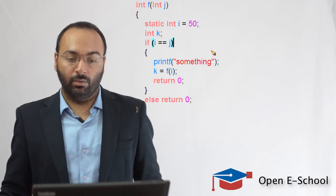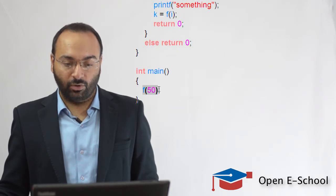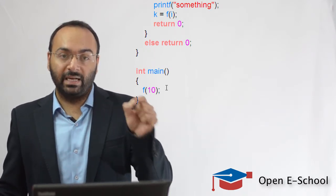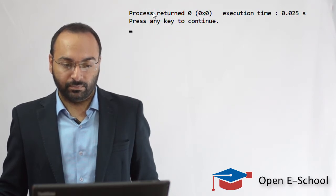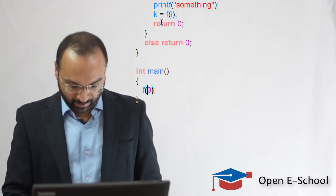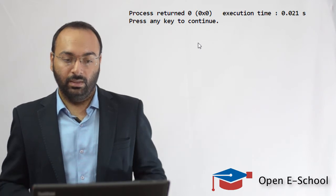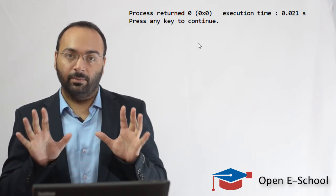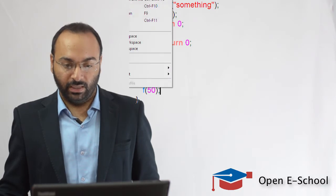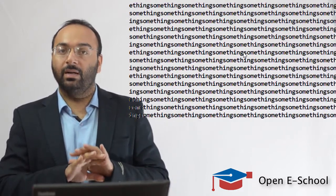To confirm our understanding, let's run this program. If we call this function passing j equal to 10, nothing is printed and the program stops. If we set j equal to 20 and run again, nothing is printed and the program stops. Now if we give j equal to 50, the program goes into an infinite recursive loop and it will never terminate.